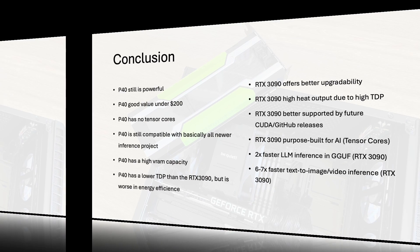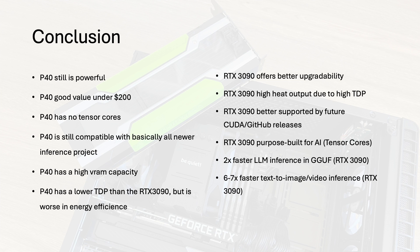The bottom line is that while the P40 was a powerhouse in its time, the RTX 3090 is purpose-built for today's AI challenges. For an AI home lab enthusiast, the 3090 offers a much better path and delivers between two to seven times the performance across various AI tasks. If you can get a P40 at a decent price — under 200 US dollars — it can still be worth it. But if you have the money to invest in RTX 3090s and are willing to invest some time in cooling solutions, it can be a game changer for your projects. The 3090 will also be better future-proofed as a newer card, offering better compatibility for upcoming apps and tools.